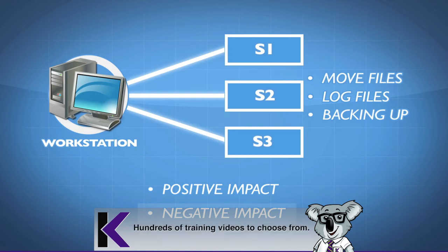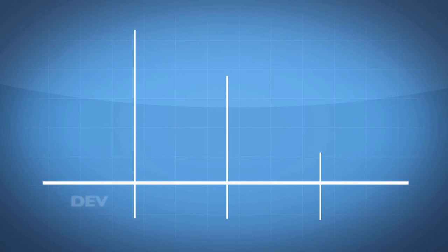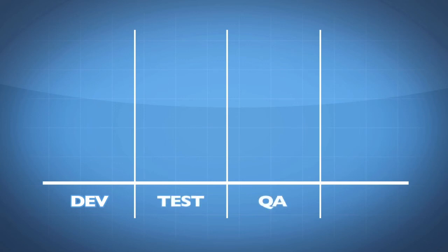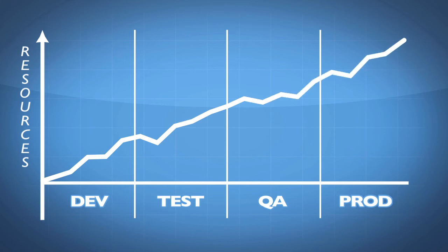One of the things you want to do — and this is how I normally have my environments — is to have your development environment separate from your test environment, separate from your QA environment, which is separate from your production environment. The amount of resources needed during development are very few. The amount of resources needed when testing is a little bit more, QA is a little bit more, and in production it's a lot more.